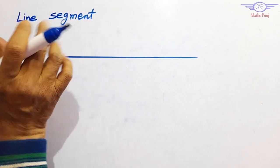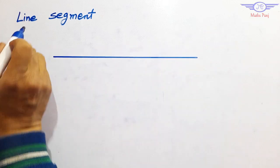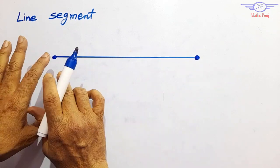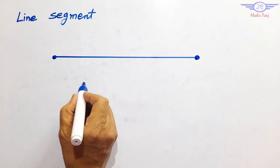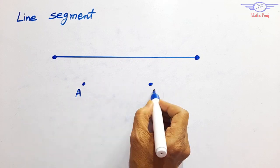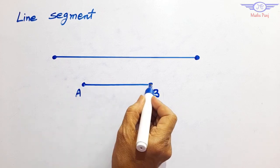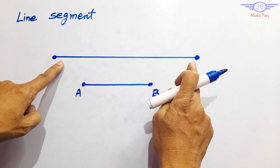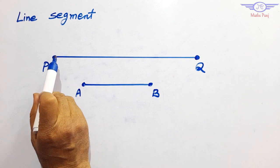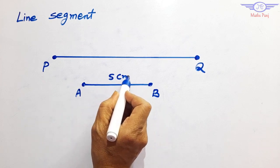Next topic is line segment. What is a line segment? A line segment is a part of a line. A line has an endless direction, but a line segment has end points — it always has two end points. It can also be obtained by joining two points. When we join point A and point B, the joining of two points is a line segment. It has a definite length — we can measure a line segment, for example PQ. We can measure the distance between P and Q, or A to B — it can be 5 cm and so on.